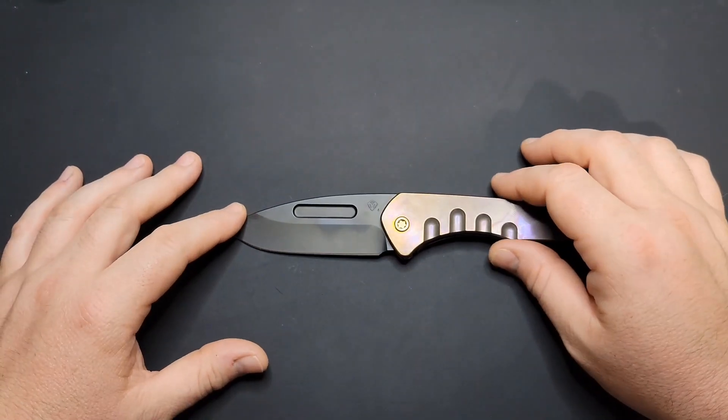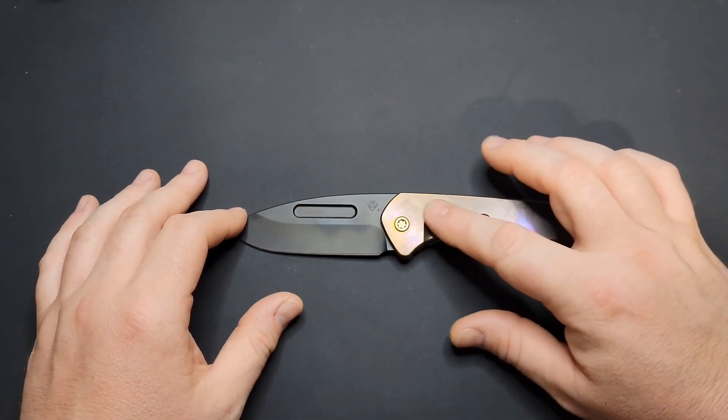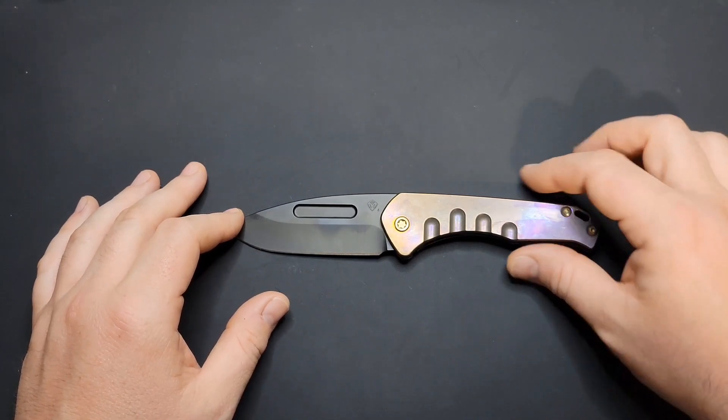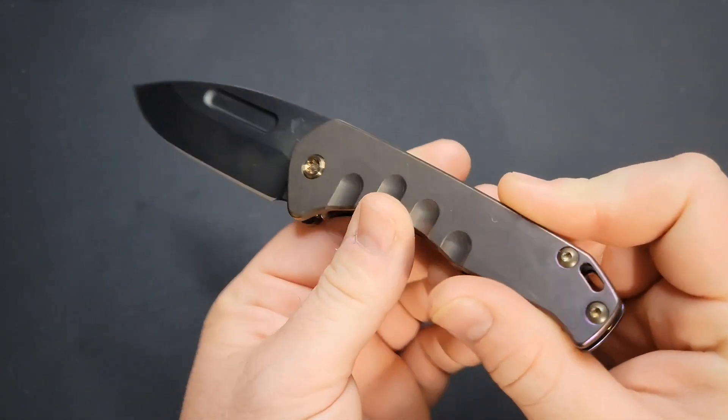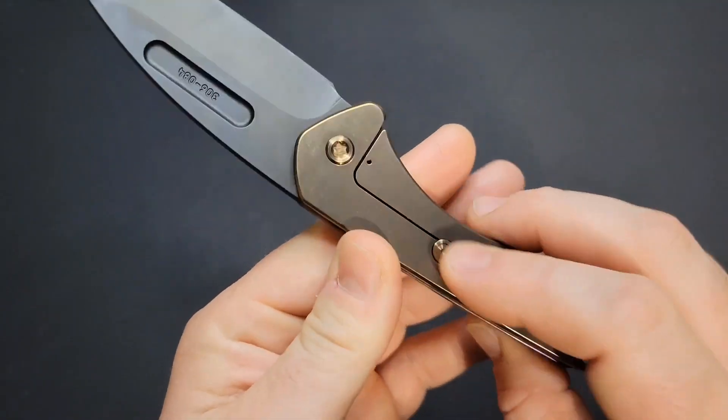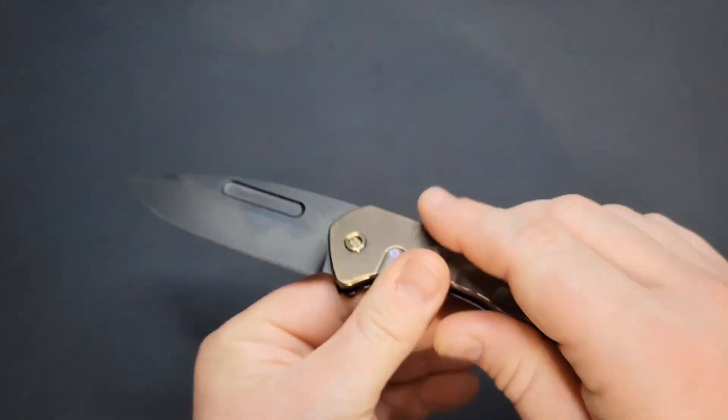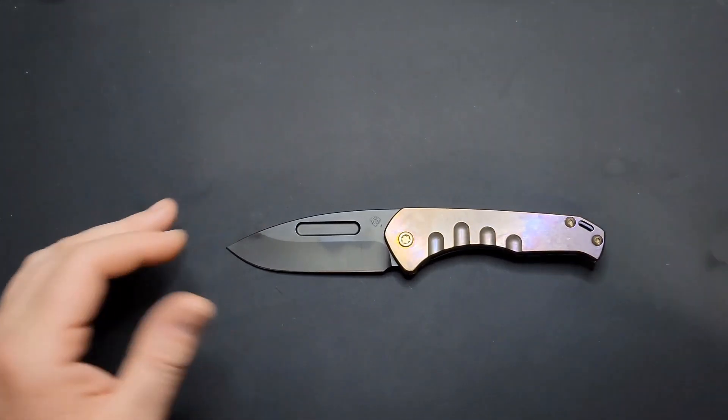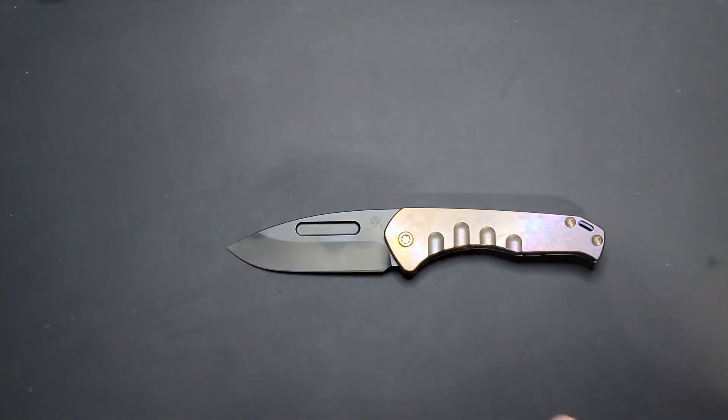It's got a PVD coating on the blade and a really super nice bronze ano, faded bronze ano, on the handles - titanium handles. So anyway, we're going to talk all about it, get into it. Let me go ahead and get the size specs out of the way here.